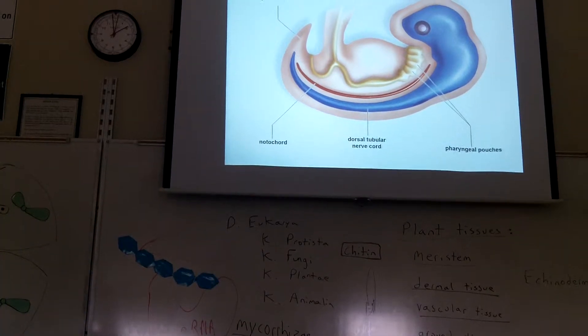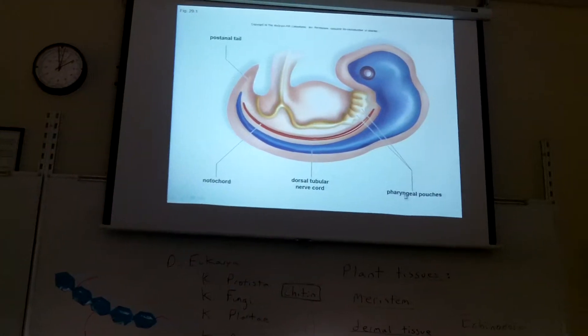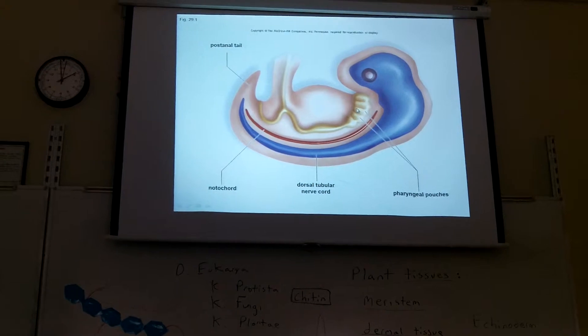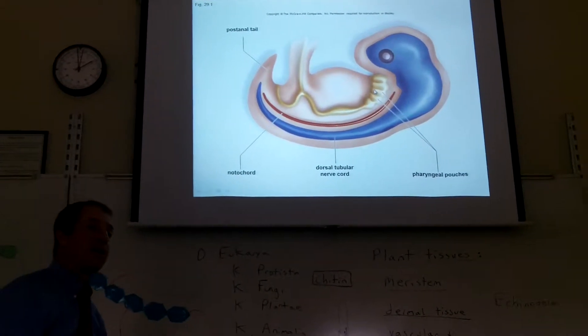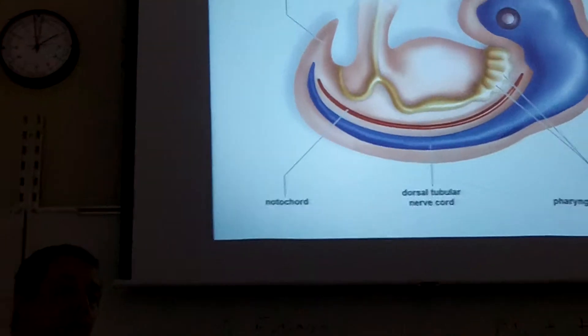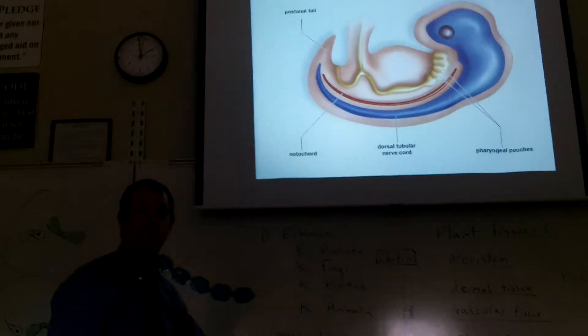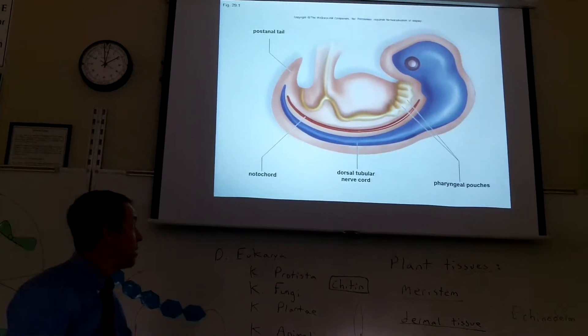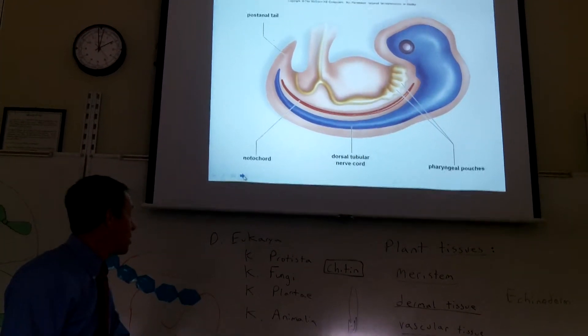So the pharyngeal pouches are like gills? They're like gills, not like gill slits. And those disappear. They're only present in our embryos. And they become part of your throat. The back of your throat. There are no more gill slits for us.